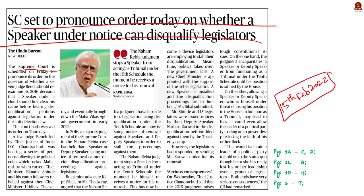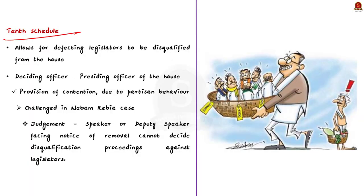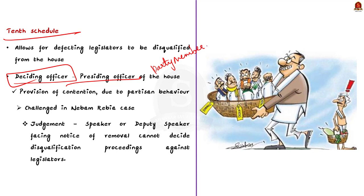Any question regarding the disqualification of the defected member is to be decided by the presiding officer of the house, as per provisions of the 10th schedule. This clause has been a zone of contention because the presiding officer, being a party member, will act according to the needs of his party. This impartial nature of decision-making relating to anti-defection law is lost due to the partisan behavior of presiding officers. This clause was challenged in the Nabam Rebia case in 2016.